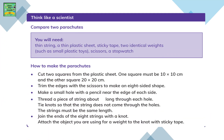Now here's an activity. You will need to make two parachutes. For that you will need a thin string, a thin plastic sheet, sticky tape, two identical weights such as small plastic toys, scissors and a stopwatch. To make the parachutes, cut two squares from the plastic sheet. One square needs to be 10 by 10 cm and the other needs to be 20 by 20 cm. Trim the edges with the scissors to make an 8-sided shape.